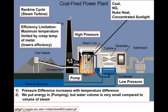The efficiency limitation of the Rankine cycle is different than the Brayton cycle. In these pipes, we have very high pressure steam at very high temperature, so the problem is how do we contain that without the metal breaking. We can't get this too hot because it will cause the rupture of the pipes, so the lower temperature we need to keep here is the limitation to our efficiency.